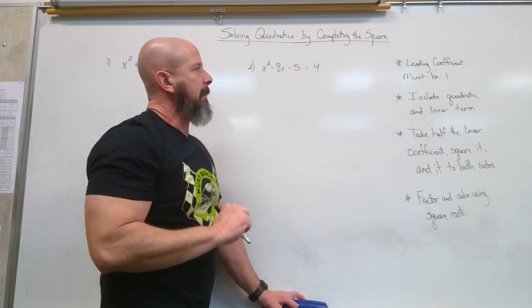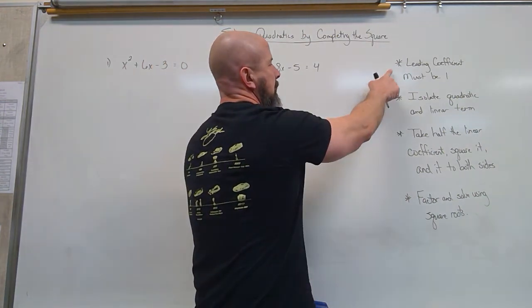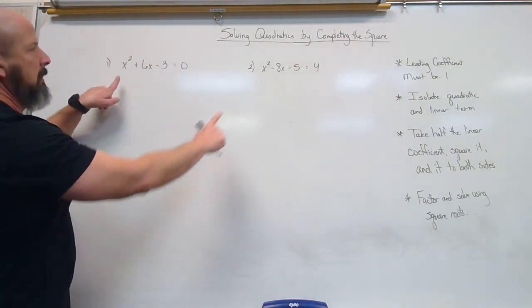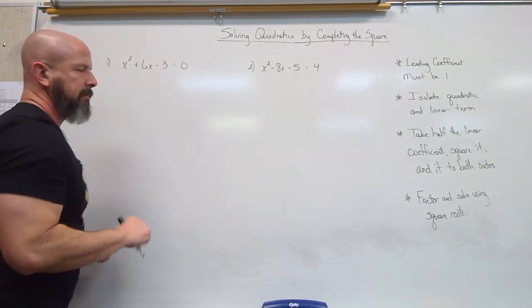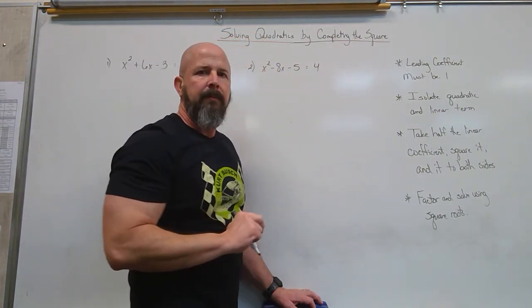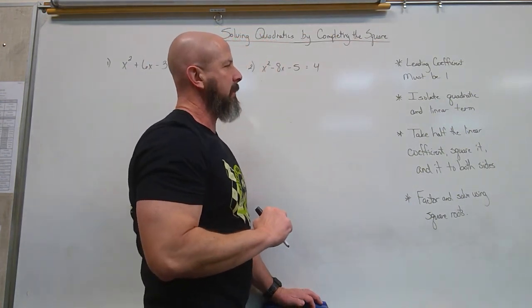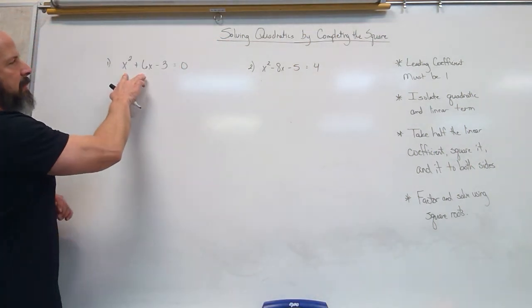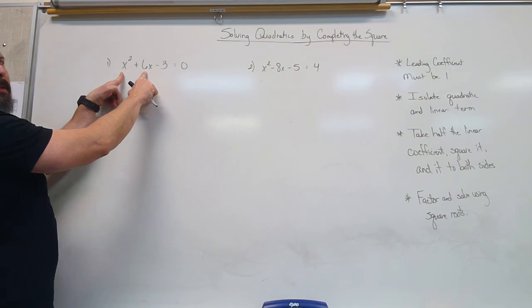But one of the things that must happen is the leading coefficient must be a 1. So in my two examples here, I have a 1 for the leading coefficient. I need to isolate the quadratic and the linear term. So isolate the quadratic and the linear term. If I look back here at number 1, it would simply mean I want the x² and the 6x alone.